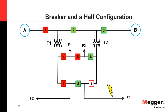Q&A: In the breaker-and-a-half configuration, wouldn't Breaker 2 usually be open? Yes, that is correct — Breaker 2 should be open; otherwise sources A and B would be continuously feeding together. The presenter acknowledged this as a mistake in the diagram.